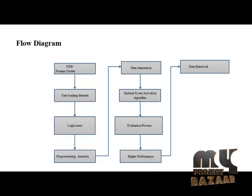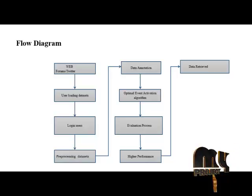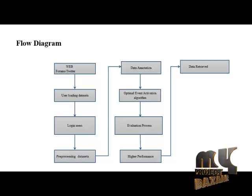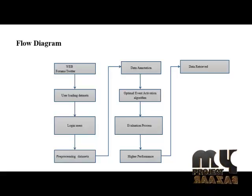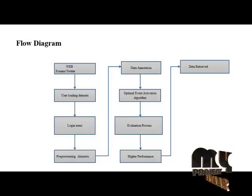The optimal event activation algorithm is interfaced in the algorithm stage. In this algorithm process, the evolution process is also carried out. Through this evolution process, the performance of the datasets and forums can be evaluated to give higher performance. The data is then retrieved using these higher-performance methods. Pre-processing datasets and data organization are the two important processes of the optimal event activation algorithm.